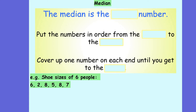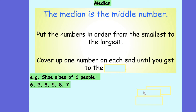But why have we been doing this? Now we're going to look at a new type of average. So far we've looked at the mean and the mode, now we're going to look at the median. The median is the middle number. You start by putting the numbers in order from smallest to largest, and then you cover up one number at each end until you get to the middle number.